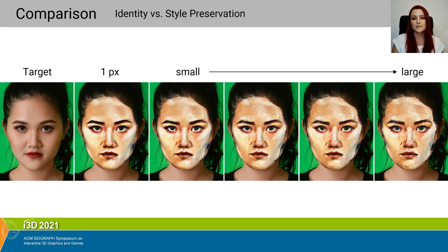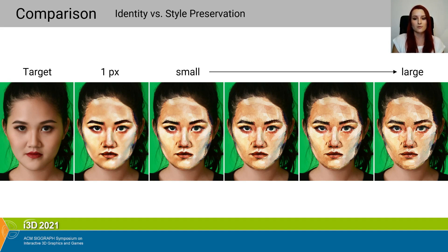We can transition between identity and style preservation by controlling the threshold during the computing of individual chunks. In case we set the threshold to zero, all chunks are forced to be just one pixel, which underlines the identity, but the result loses all the high-frequency details of the style. By increasing the threshold, we interpolate from small chunks to larger ones, which emphasizes the style's details but suppresses the target's identity.